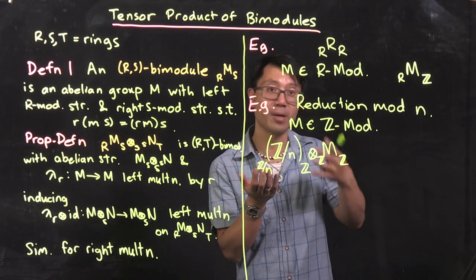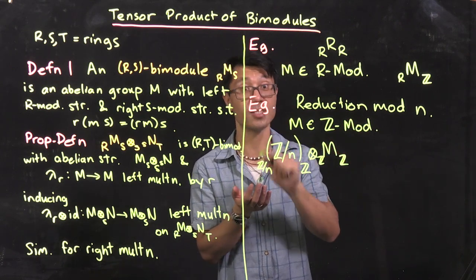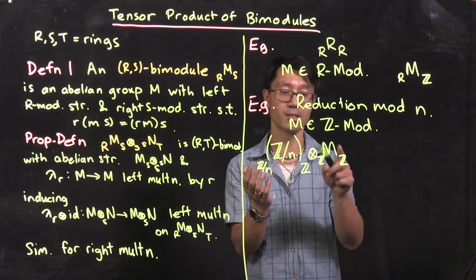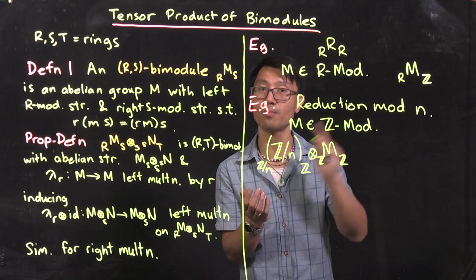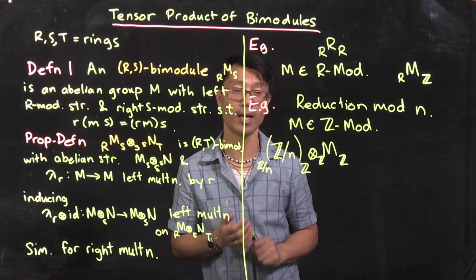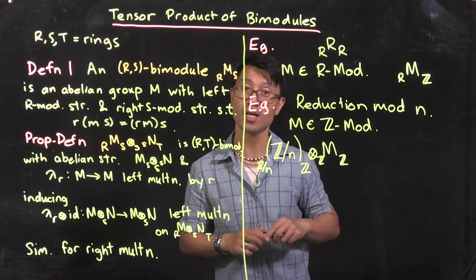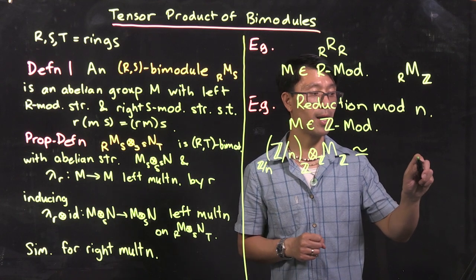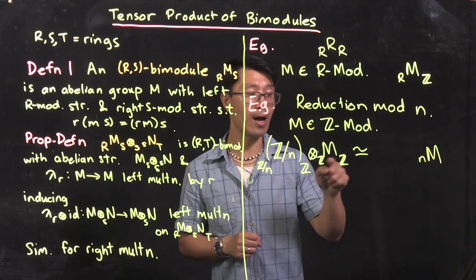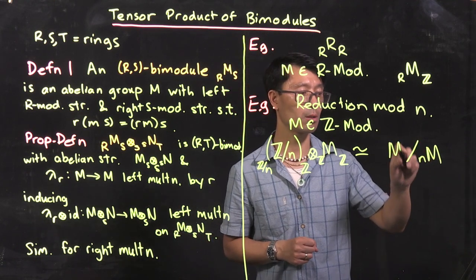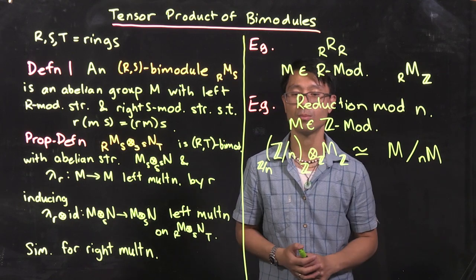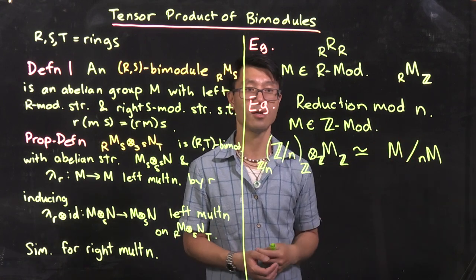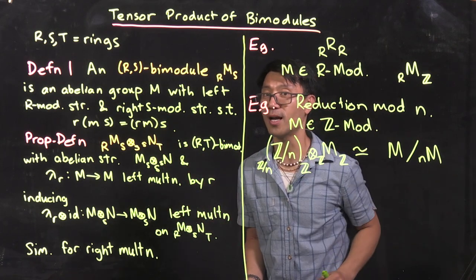What I want to show is what this localization actually looks like. It's isomorphic to something very simple: M/NM, the quotient of M by the subgroup NM of elements that are N times something. So you might have seen this definition for reduction mod N before — you kill the action of N. What's really nice is we can reinterpret this reduction mod N as a tensor product with Z/N, which tells you it's a Z/N module.